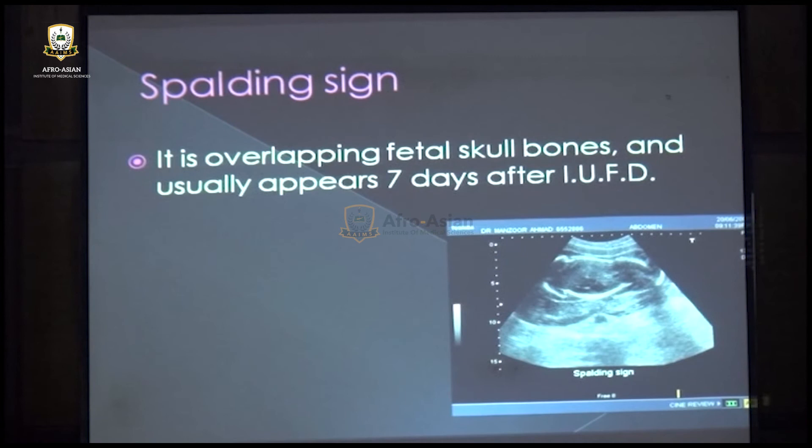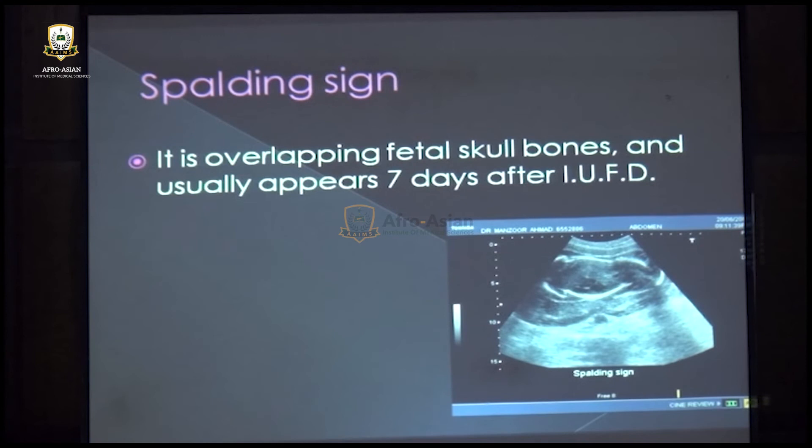Spalding's sign appears 7 days after intrauterine fetal demise and consists of overlapping of the fetal skull bones. So the definitive sign of fetal death is absent cardiac activity, but we can also confirm with Roberts sign, soft tissue edema, and Spalding's sign.